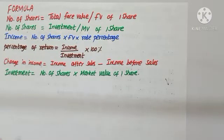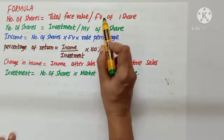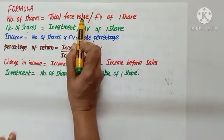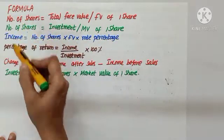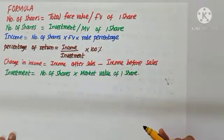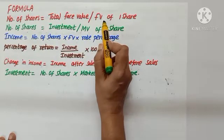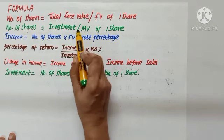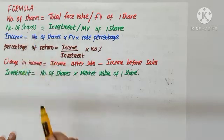As we move on to the mathematical part of it, let us learn some formula for the better understanding of the problems. Number of shares. Two ways I can calculate. Suppose they give you face value of one share and the total face value, divide. Total face value divided by face value of one share gives us number of shares. Not only that, you can divide investment by market value of one share. So both the cases give us number of shares. So in all the problems we will be finding number of shares. Why do we need it?